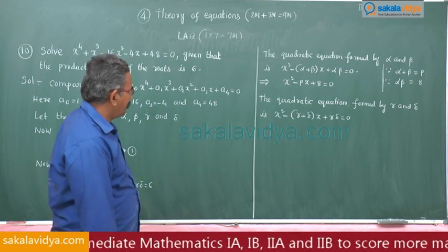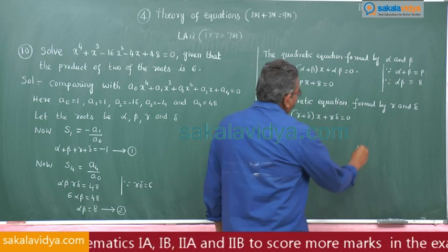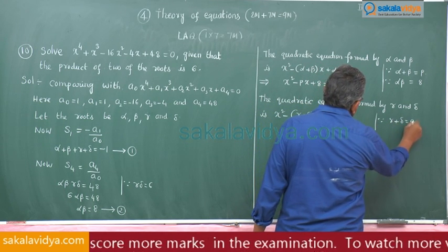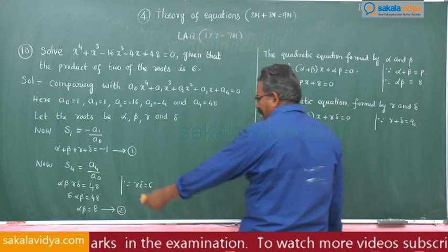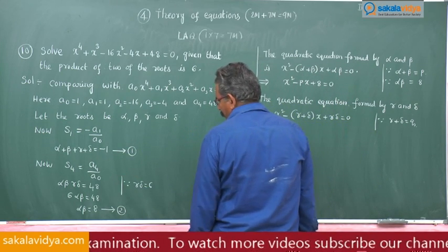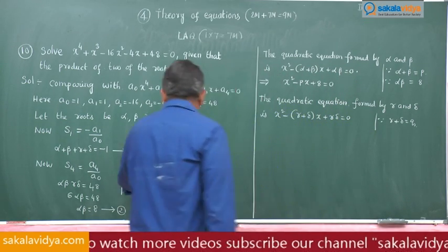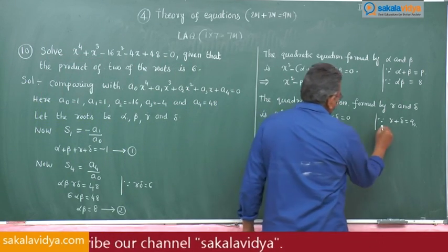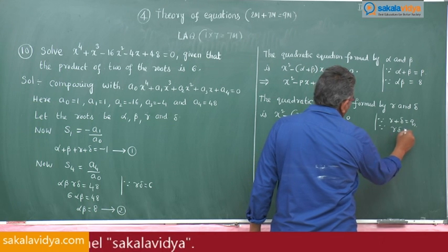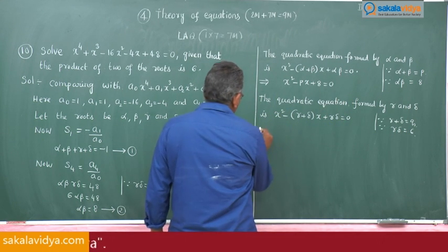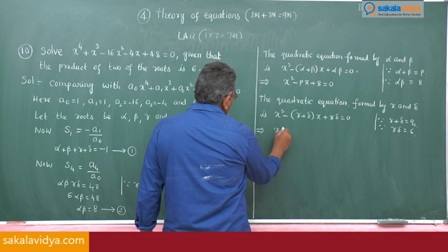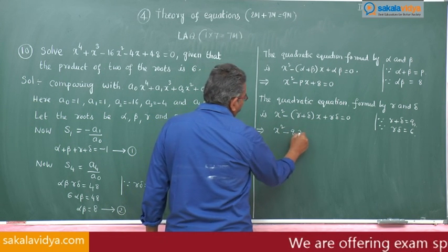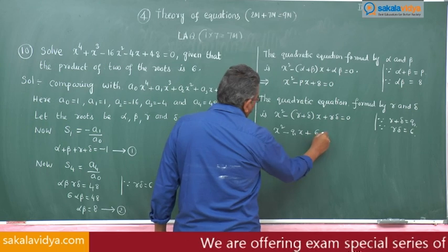Similarly, the quadratic equation formed by gamma and delta is x squared minus (gamma plus delta) x plus gamma delta equals 0. We do not know the value of gamma plus delta, so let gamma plus delta equal q. Gamma delta is known and equals 6, so the second quadratic equation becomes x squared minus q x plus 6 equals 0.